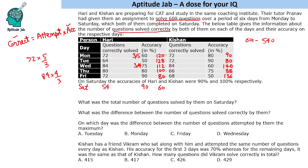Kishan has 100% accuracy on Saturday, so whatever number he attempts, all will be correct. Adding Kishan's five-day attempts gives 534. So on Saturday, Kishan will attempt 66 questions and get all of them correct. This is the key information we needed to calculate in order to answer the questions.